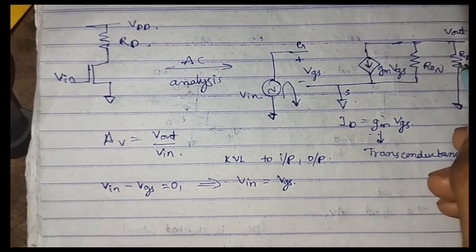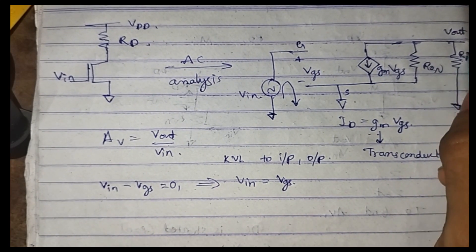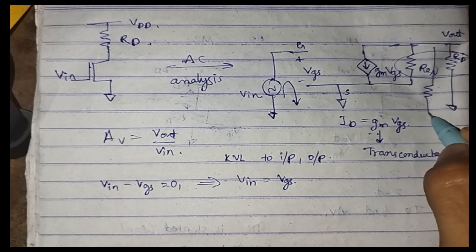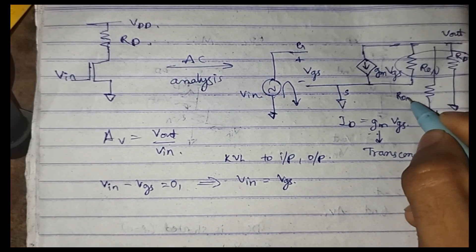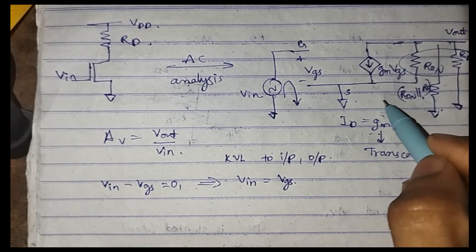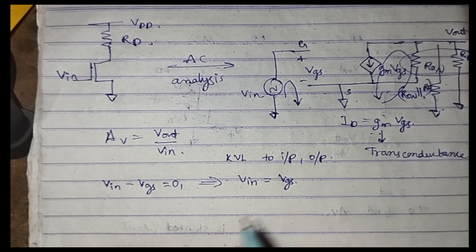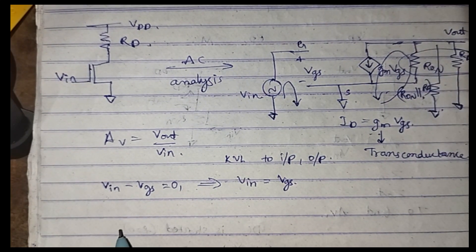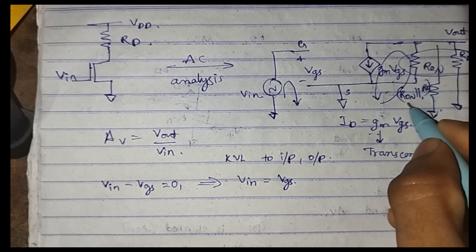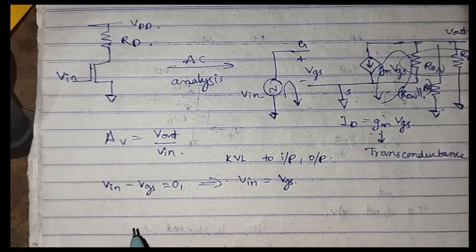At the output side, R_on and RD come in parallel, so we can combine them as a single resistor R_on parallel RD. When we apply KVL to the output loop, gm·VGS is the current flowing through the resistor RD parallel R_on. This can be drawn as: the current source gm·VGS driving the parallel combination, with the output taken across it and the bottom terminal grounded.